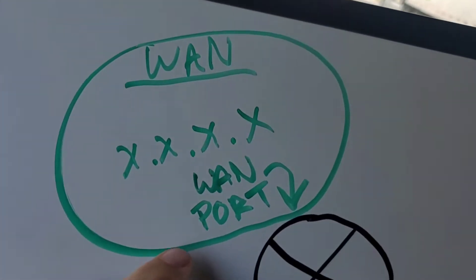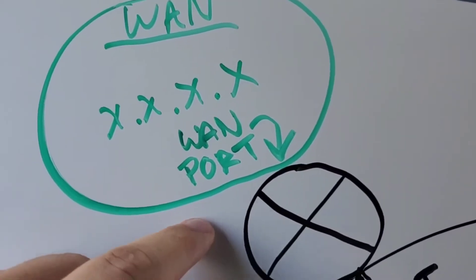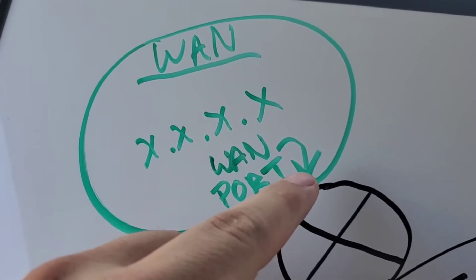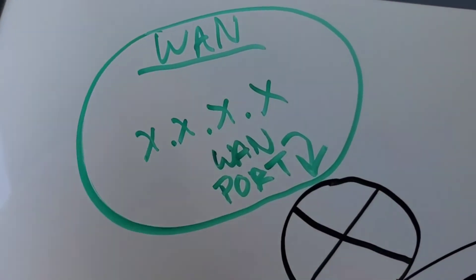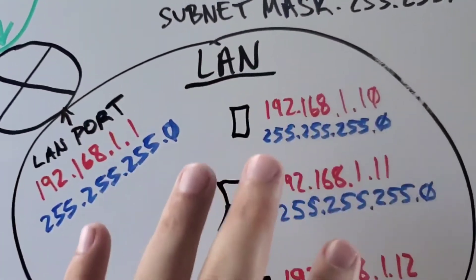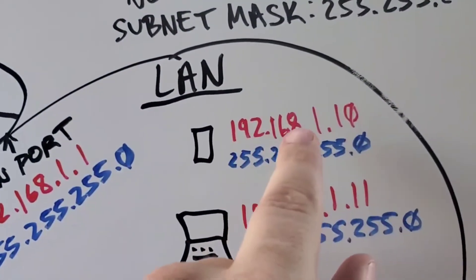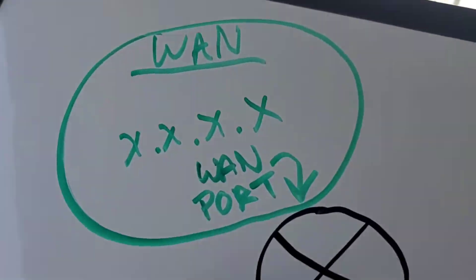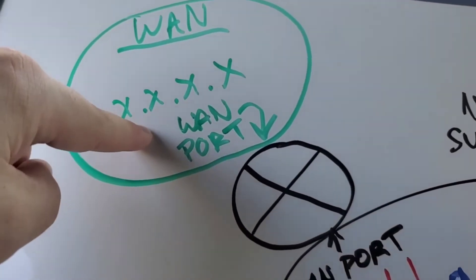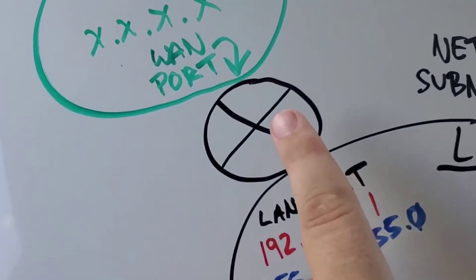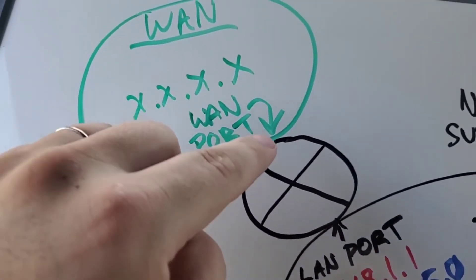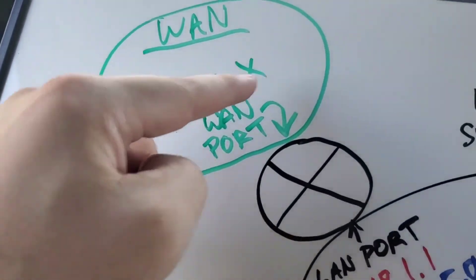Your WAN or wide area network port that goes to your modem — that's where you get the internet from. It will also have its own IP address. I just put x.x.x.x because it's not the same as your local area network. It will not start with 192.168 — it will be a public IP address so you can get on the internet. So anything going out of your network through your router will have a source IP address of whatever your WAN is. When you're on the internet, everything is communicating as this public IP.